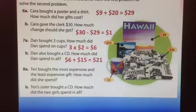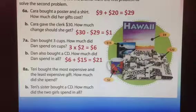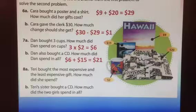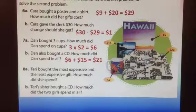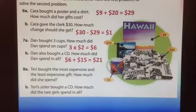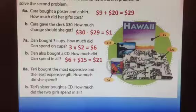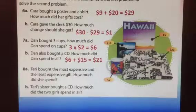Last question, number 8. Terry bought the most expensive and the least expensive gift. How much did she spend? The most expensive gift would be the shirt, which cost $20. The least expensive gift would be the cup, which cost $2. 20 plus 2 is 22, so the answer to 8A is $22. Terry's sister bought a CD. How much did the two girls spend in all? So 22 is what Terry spent, and the CD is $50.